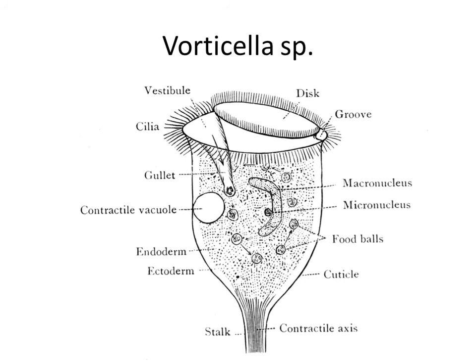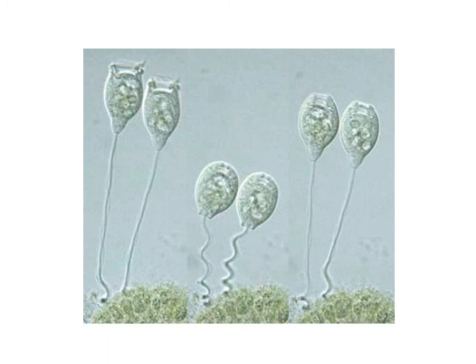What is also specific is that Vorticella has one large nucleus called the macronucleus and one small one called the micronucleus. This is a light microscopic picture of Vorticella — the ones in the middle are disturbed, and you can see how the stalk is contracted.